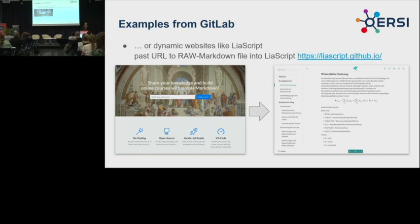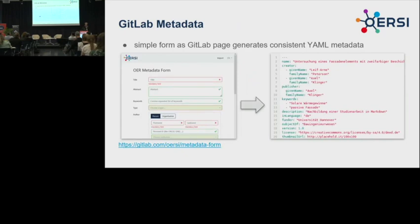One thing to consider when using GitLab as a repository is that we also need metadata to find the right materials for a search index. We could provide a simple YAML text file, but it's hard to write by hand. Instead, we can provide a simple form via a GitLab page, shared in template projects, to help authors enter the necessary information. This metadata is then used by ERSI to aggregate harmonized metadata. It's a proof of concept, but it could be easily reused in other contexts.